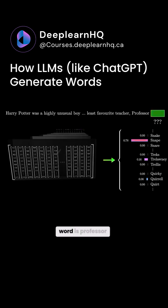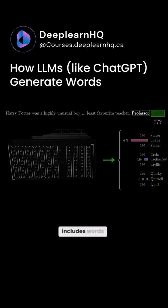For example, if the very last word is professor and the context includes words like Harry Potter and immediately preceding least favorite teacher, then a well-trained network that had built up knowledge of Harry Potter would presumably assign a high number to the word Snape.